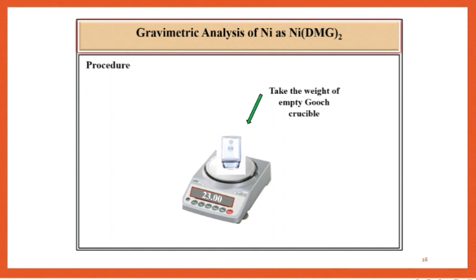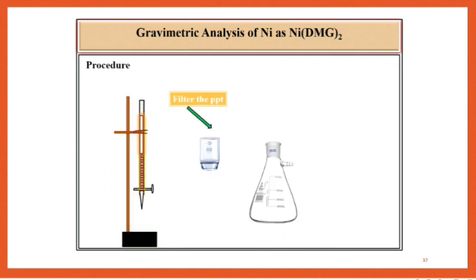Meanwhile take the weight of empty gooch crucible, record it in an observation table, and then filter the solution of nickel DMG through the gooch crucible. Thereafter wash this precipitate by using hot water. Give the washing for 2 to 3 times.